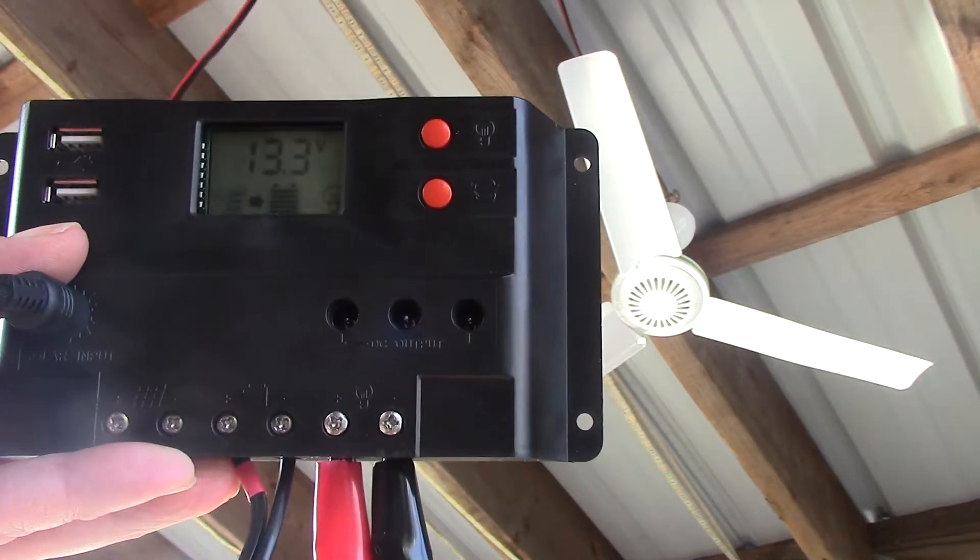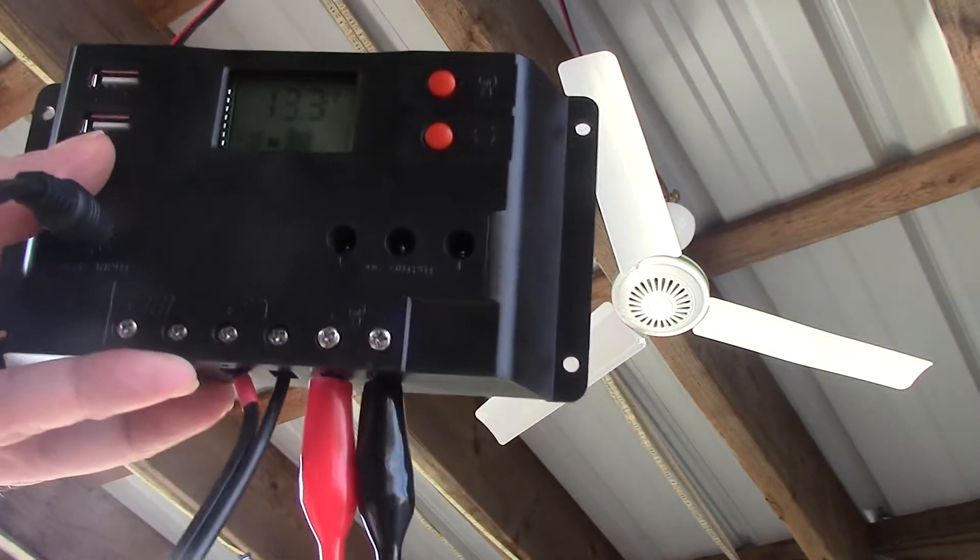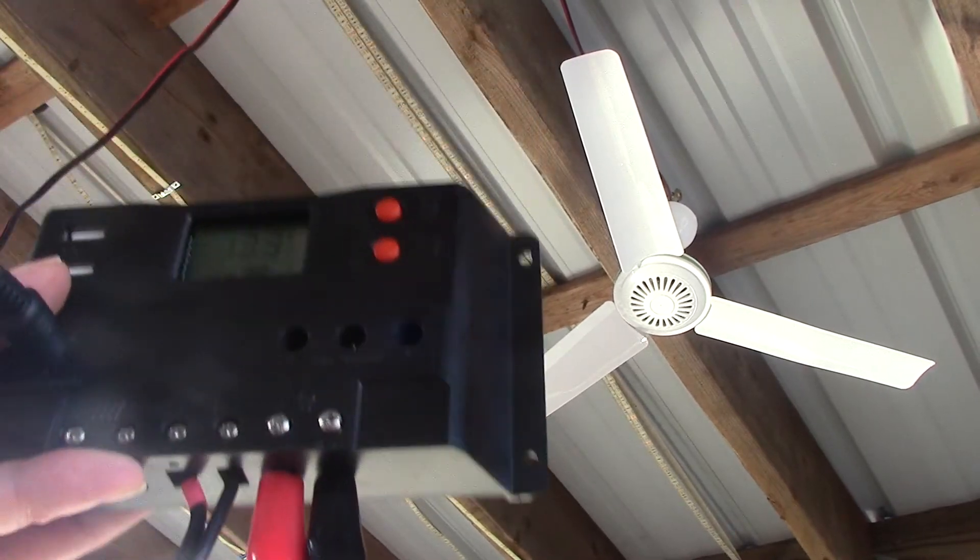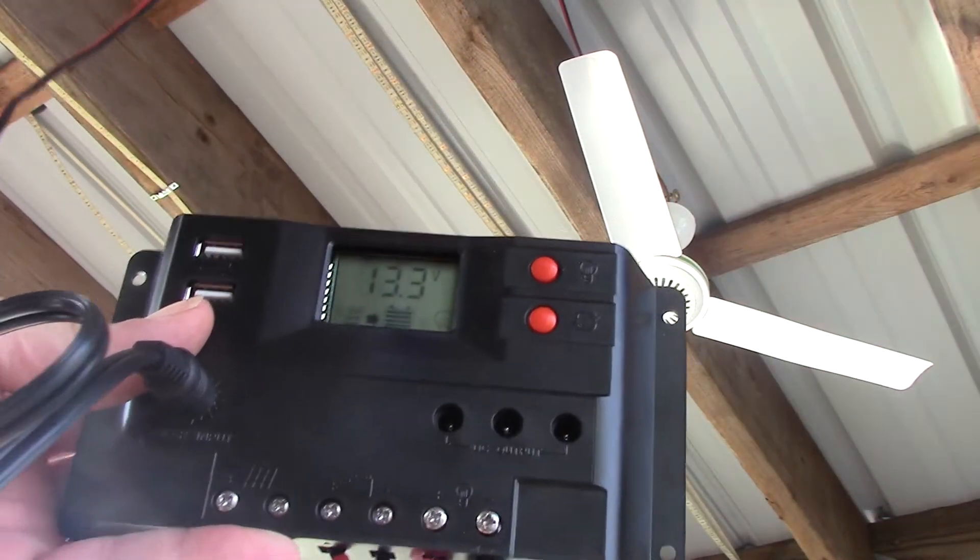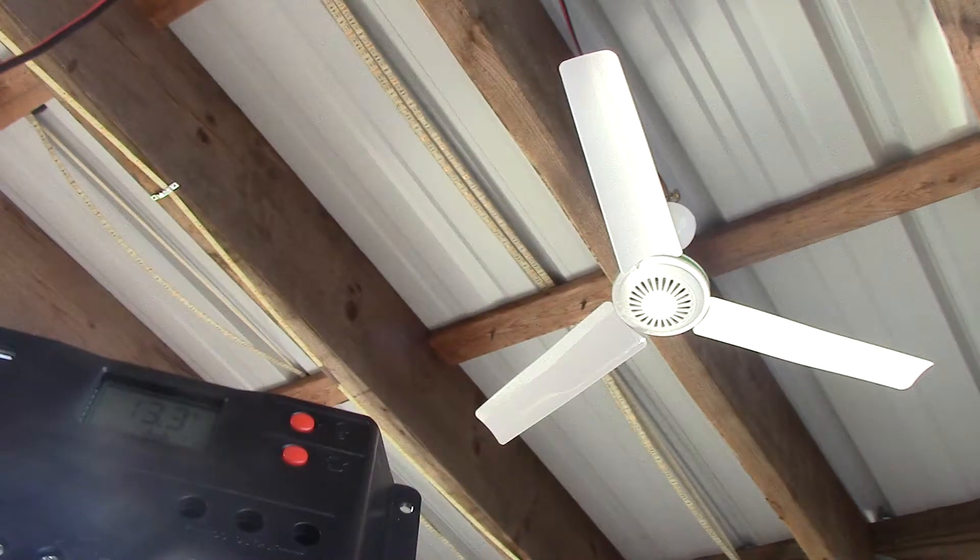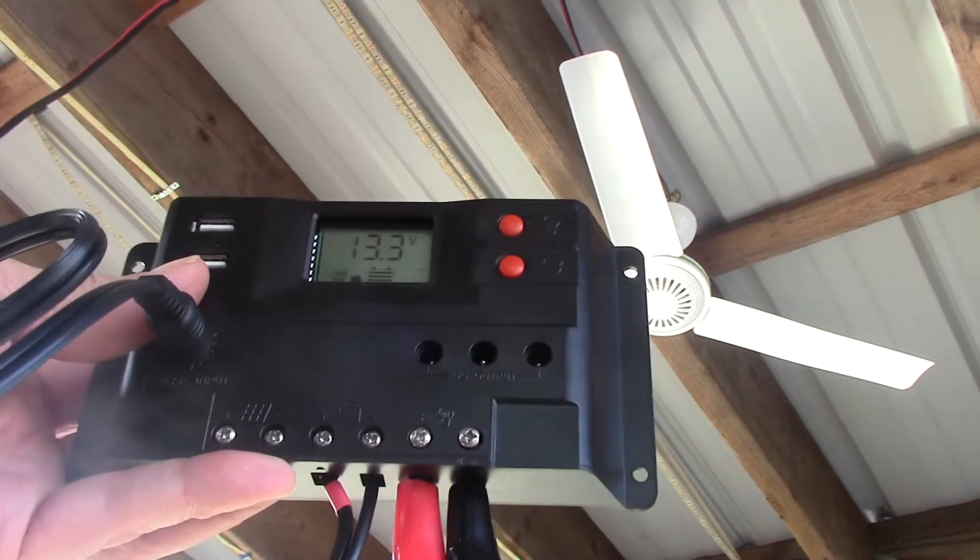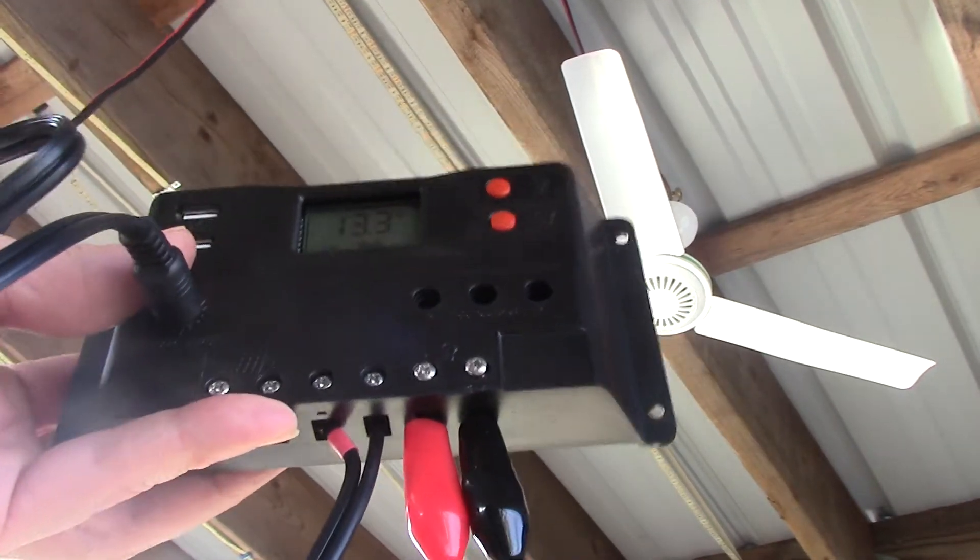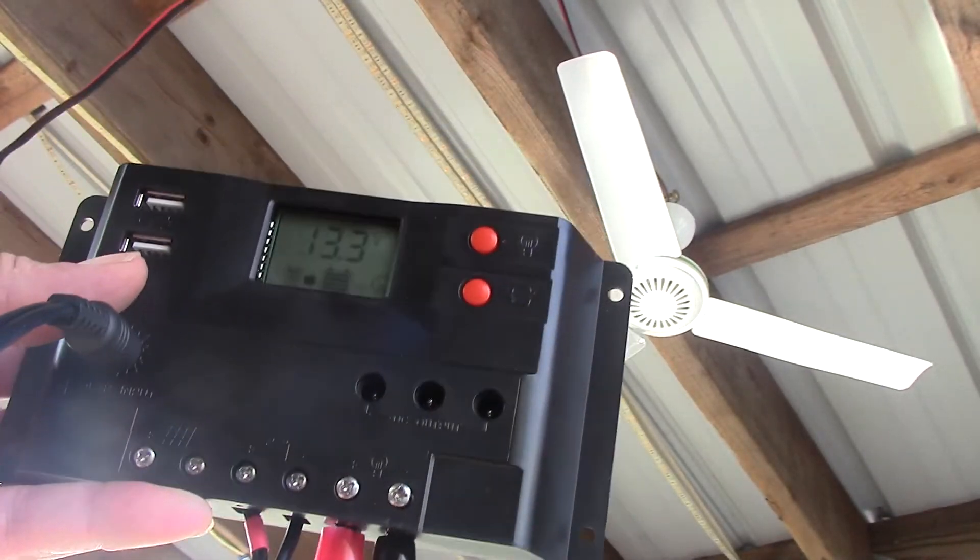Hey folks, it's Jim. I remember I was going to run a fan off the Harbor Freight charge controller. I believe this is a 10 amp charge controller called Thunderbolt. The fan only draws about one and a quarter amps. It's a 15 watt fan, so at 12 volts, it's about one and a quarter.